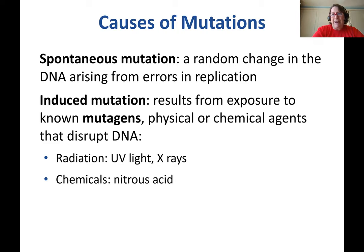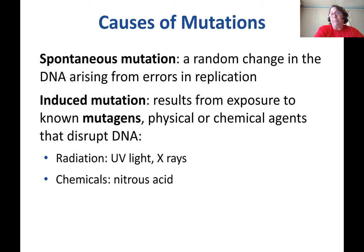There's also an induced mutation. That can be induced by something occurring in the environment or in the lab — we may actually create conditions that are more mutation-prone. Radiation is a really good example; we may expose bacteria to UV light hoping to cause a particular mutation. X-rays are another example — those are mutagens. Nitrous acid is one of those mutagenic chemicals. The induced mutation is the result of exposure to a known mutagen, either a physical or chemical agent known to disrupt DNA.